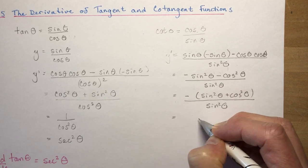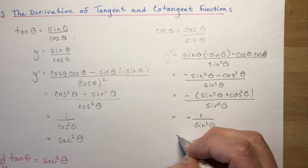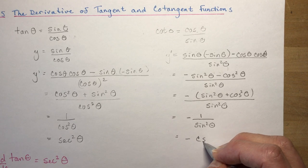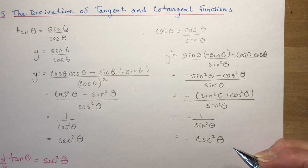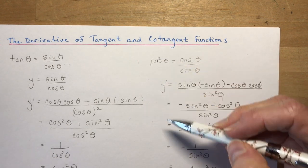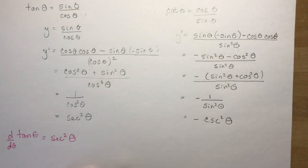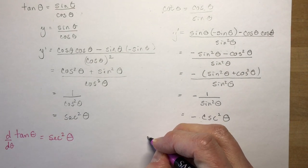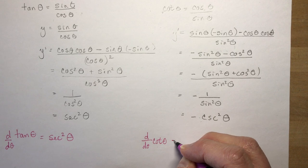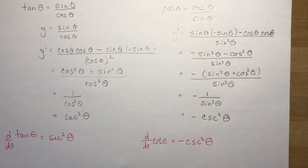That gives us negative 1 over sin² θ, and 1 over sin² θ is cosecant squared θ, so the result is negative cosecant squared θ. Notice the pattern: if the trig function starts with 'c' — cotangent, cosine — it has a negative derivative. The derivative of cotangent θ is negative cosecant squared θ.